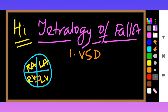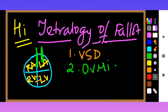Number two is overriding aorta. You know the aorta rises from here, but it is overriding — so it is called overriding aorta.